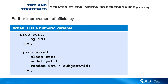You can further improve the efficiency by sorting your data by ID and removing ID from the CLASS statement in PROC MIXED, providing that ID is a numeric variable. If you specify ID in the CLASS statement, resources are needed to create the design columns for the class variable ID. Removing ID from the CLASS statement would save resources associated with dealing with the class variables.